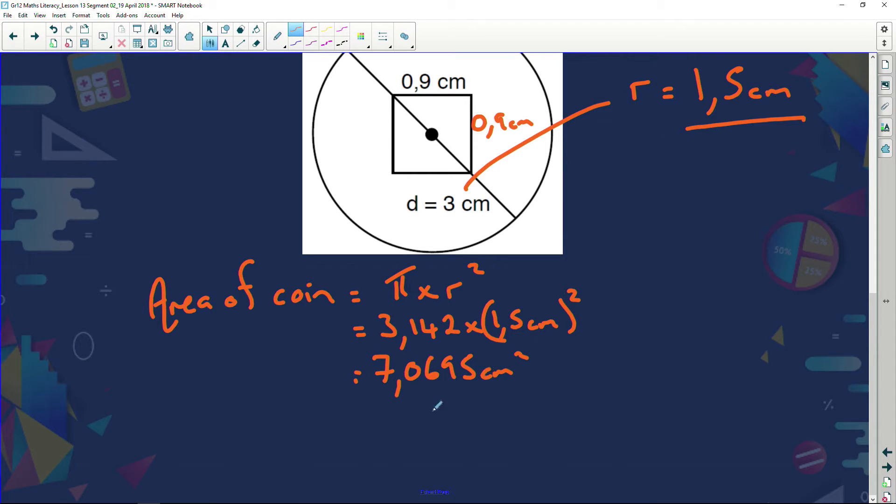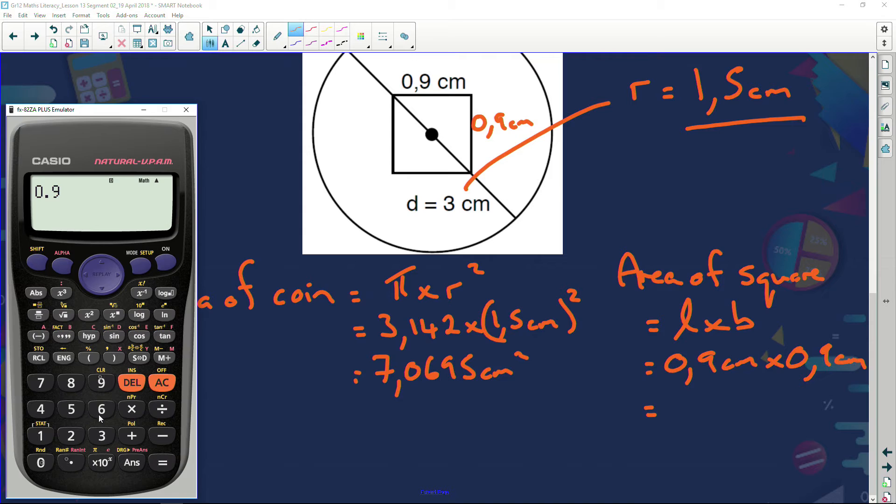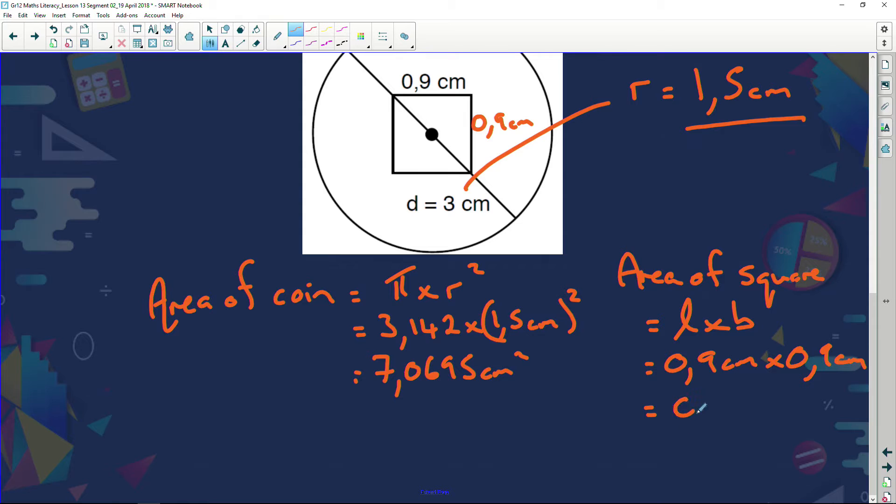Let's find, and we can round that, I'm probably going to round it at the end. Now we're going to find the area of the square, and we're going to say area of the square is equal to length times breadth, or length squared, because I've got 0.9 centimeters, and the length and the breadth are exactly the same thing. So when I say 0.9 multiplied by 0.9, or 0.9 squared, I'm going to land up with 0.81. So 0.81 centimeters squared.